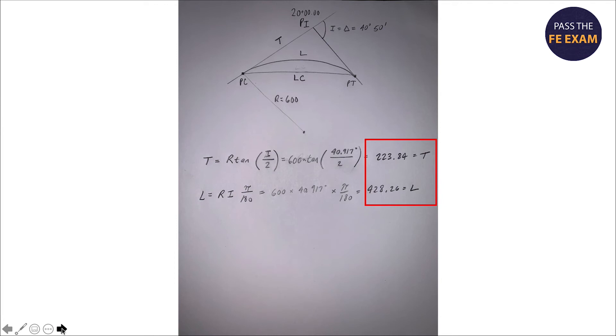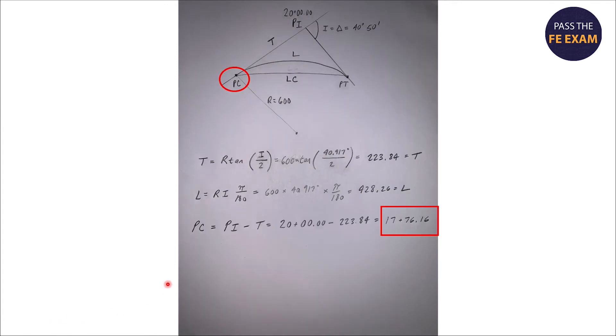Now it just becomes an addition and subtraction game. We have our PC here that we want to determine. We take the point of tangent intersection, which is 20 plus 00.00, and we subtract the tangent that we calculated earlier, 223.84, and we come up with 17 plus 76.16.